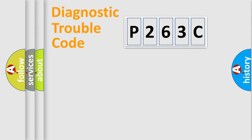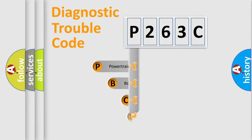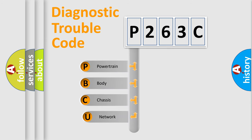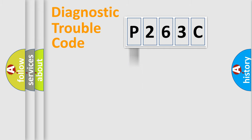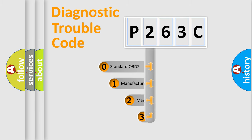Let's do this. First, let's look at the history of diagnostic fault code composition according to the OBD2 protocol, which is unified for all automakers since 2000. We divide the electric system of automobile into four basic units: Powertrain, Body, Chassis, and Network. This distribution is defined in the first character of the code.